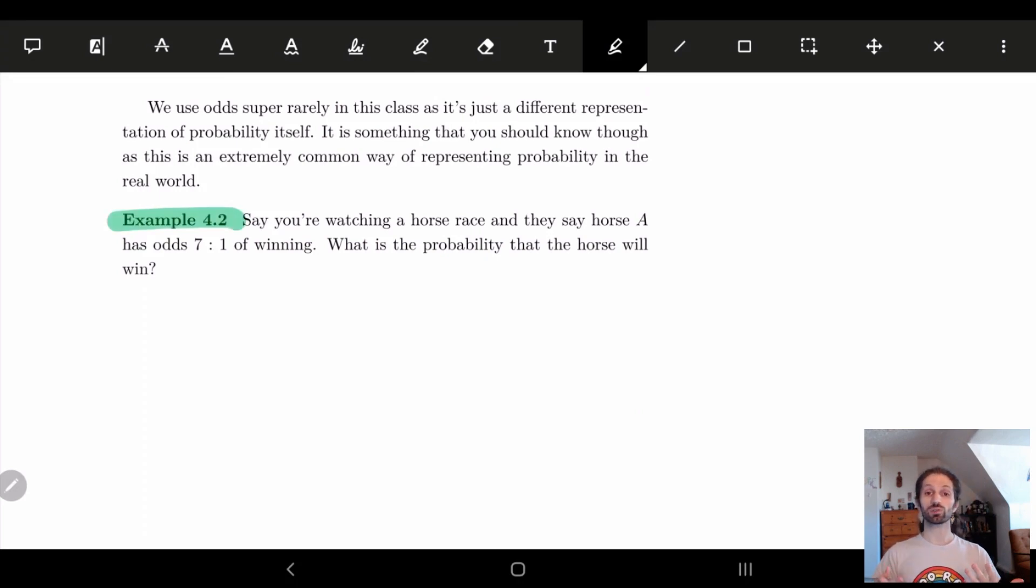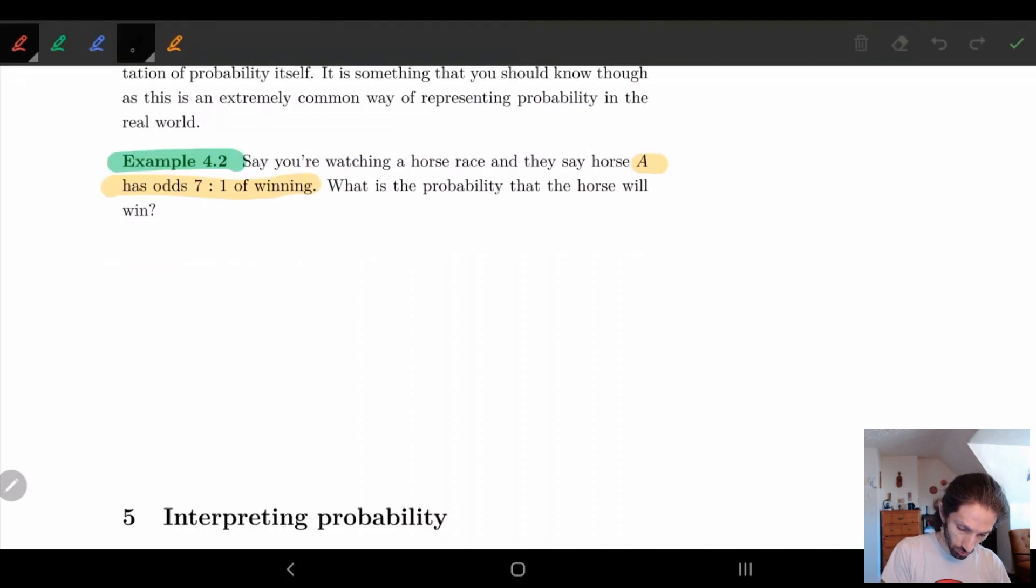We're watching a horse race and the commentator said that the horse has odds of winning seven to one. So what does this mean? Odds of winning means in favor, right? So here we know that they're saying in favor, so seven to one means the size of A is equal to 7 and the size of A complement is equal to 1.